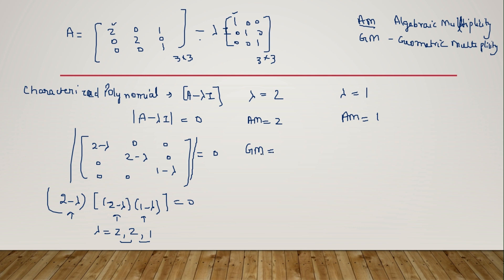Now for geometric multiplicity — it deals with direction, meaning vector space and span. It is related to the span and the number of eigenvectors. To find it, we use the formula: n minus rank of (A minus lambda I), where n is the order of the matrix.